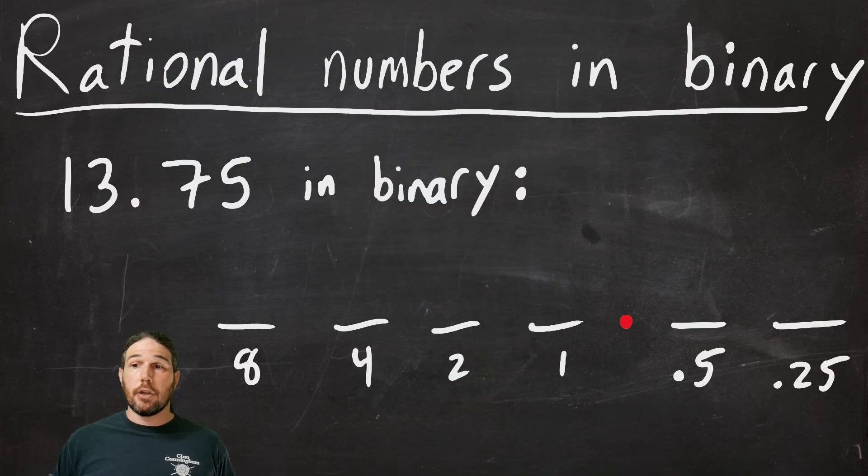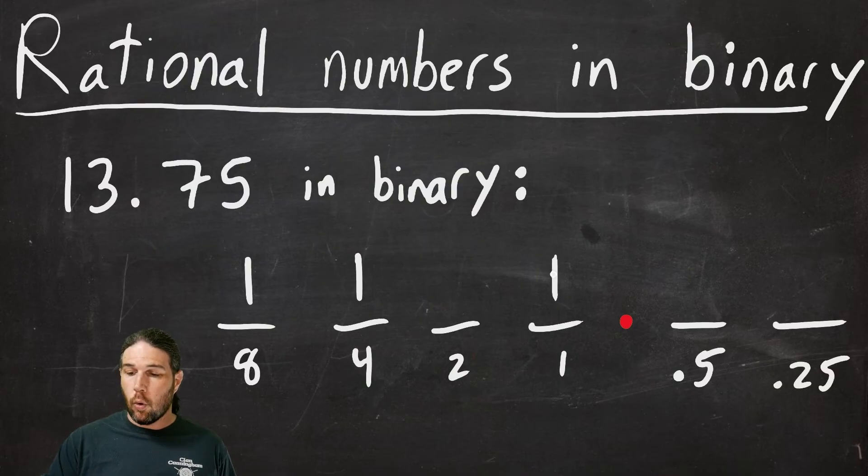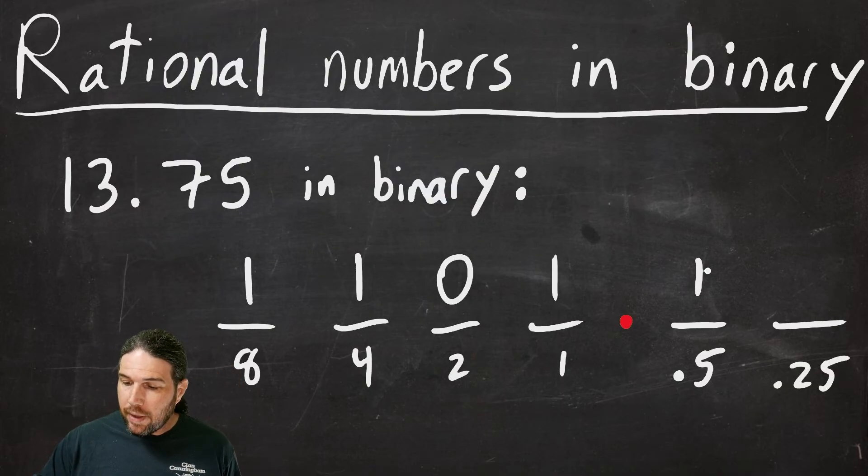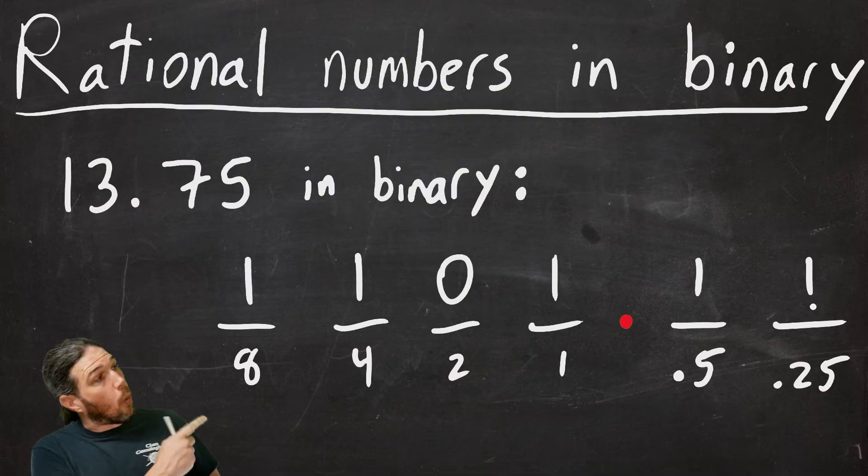We've done this a bunch of times so far. 13 is 8, plus 4 is 12, plus 1 is 13. We've got all of our numbers in order. So we put a zero in any place values that we didn't use. And then finally, 0.75 is indeed 0.5 plus 0.25. So 13.75 in binary is 1101.11. Let's do one more and then we'll finish up.